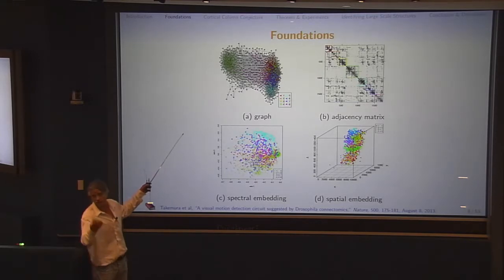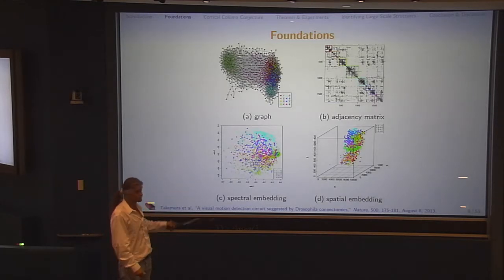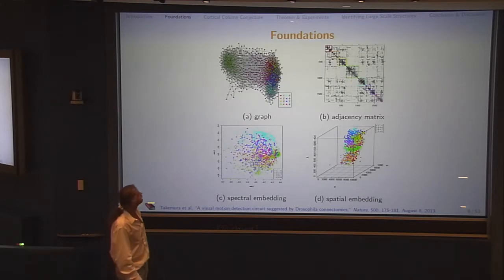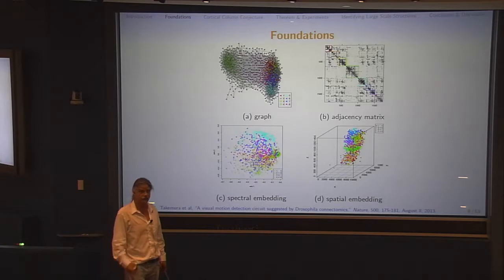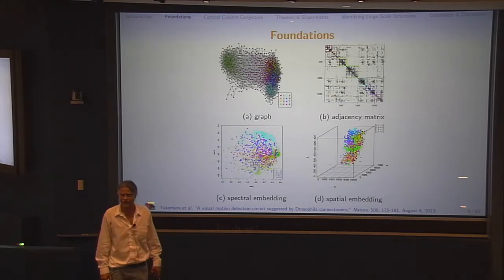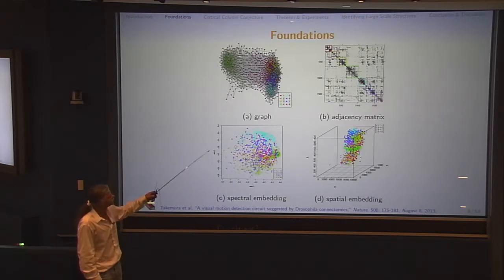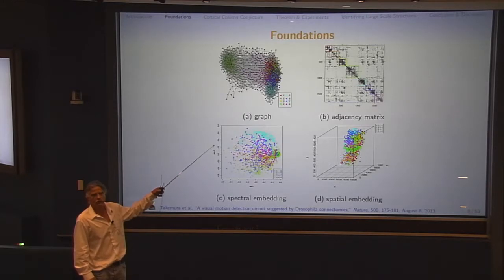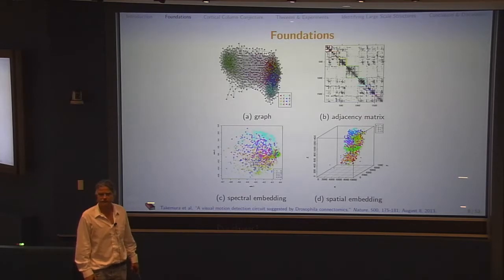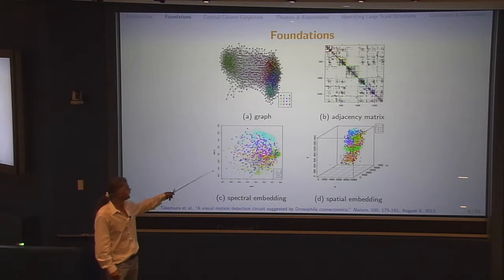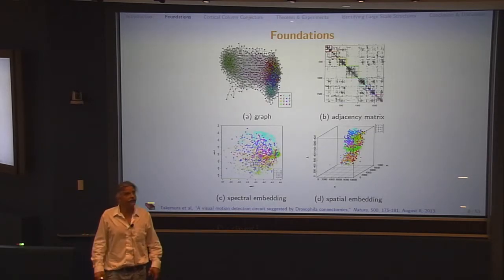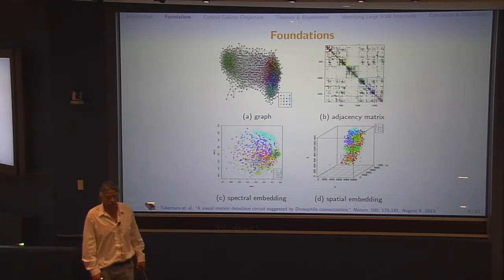Forget about the colors for now. It's vertices and edges. Let's pretend the vertices are neurons. I have the adjacency matrix. On the upper right-hand side, I have a matrix. In this particular case, it came asymmetric, directed, but I symmetrized it. I have an adjacency matrix. A black dot in the i-th row, j-th column means there was an edge between vertex i and neuron j. We take the eigendecomposition of that.